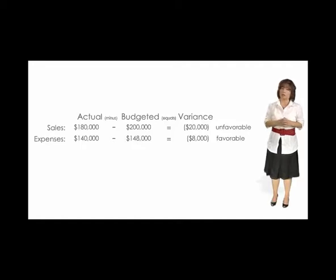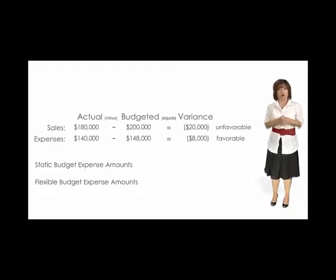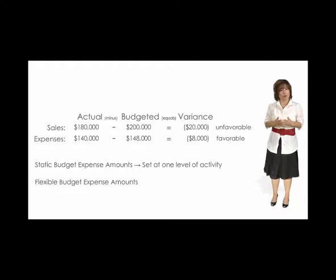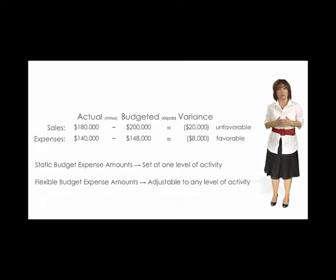We need to be cautious about computing variances for expenses — we need to use flexible budget expense amounts, not static budget expense amounts. In our example, sales fell short by 10%, or $20,000. We calculated the variance based on the original budgeted expenses, also referred to as the static budget expense amounts, where the expense amount is set to one level of activity. However, if we are at a reduced level of sales, we would also expect some expenses to be reduced. Therefore, when we compare actual expenses to budgeted expenses, we need to compare using what would have been budgeted for the reduced level of activity — the flexible budget amount — not the original static budget amount. In a flexible budget, the budgeted expense is adjustable to any level of activity.